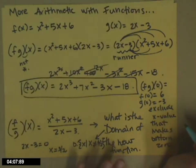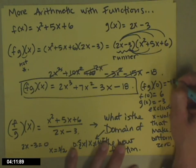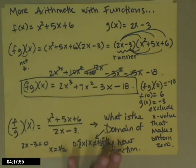So f times g of 0 would be 6 times negative 3 or negative 18. Which of course, since we had already multiplied out, we see here 0, 0, 0, negative 18.